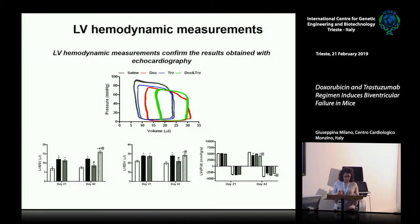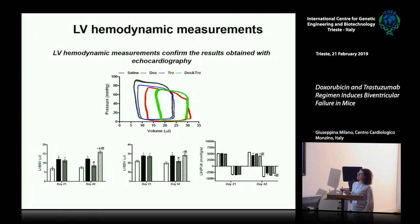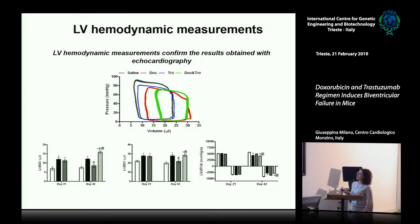These results were confirmed also by left ventricle hemodynamic measurement, obtained by introducing a catheter into the left ventricle. A shift to the right of the pressure-volume loop was observed for the Doxorubicine and Doxorubicine-Trastuzumab groups compared to control and Trastuzumab alone, with the shift being more pronounced in the combination treatment group.